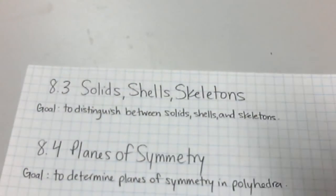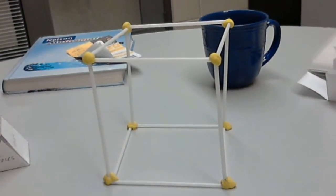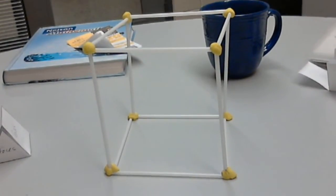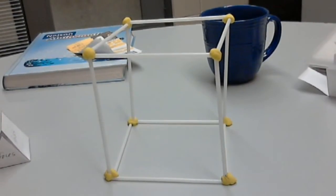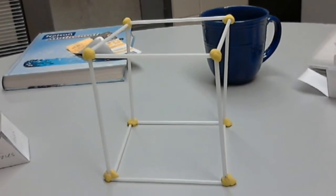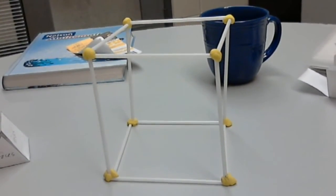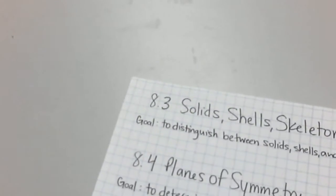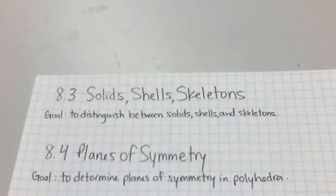Now, if I get even more bare bones — this shape here, made out of straws and plasticine, this is called a skeleton. All it is, is straws and plasticine that just looks at the edges and the vertices of a shape. That's basically the difference between a solid, shell, and a skeleton. Solids are solid all the way through. Shells are hollow but have the faces. Skeletons just show edges and vertices.